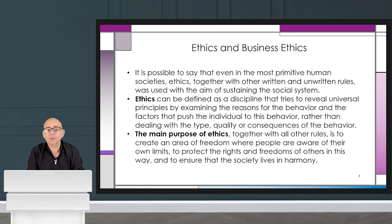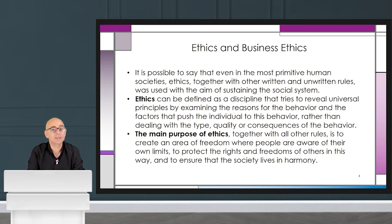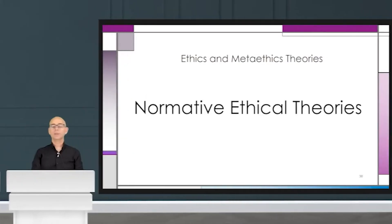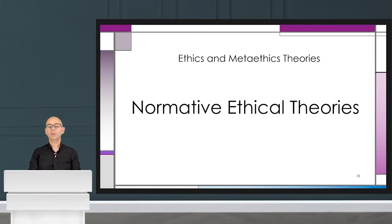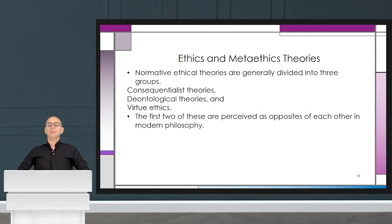Even in the most primitive human societies, ethics — together with other written and unwritten rules — was used with the aim of sustaining the social system. There is a close relationship between ethics, ethical attitudes, and the social system. This is not only about the academic or scholarly world, but is also directly related to the daily life of an ordinary person. We will now continue with normative ethical theories.